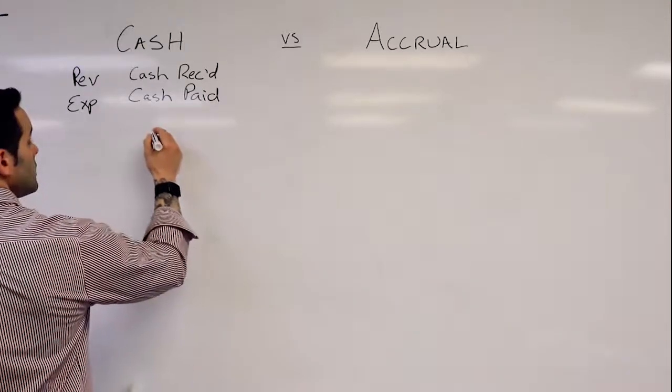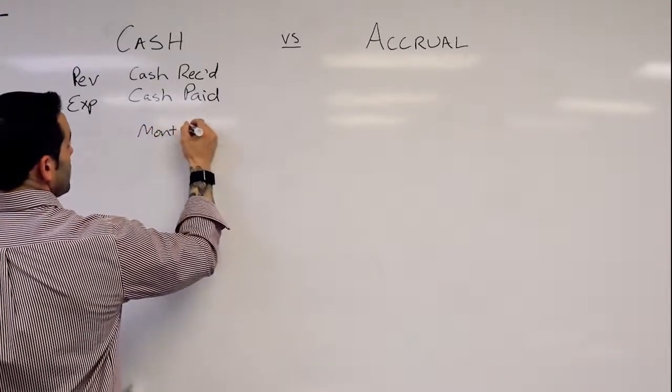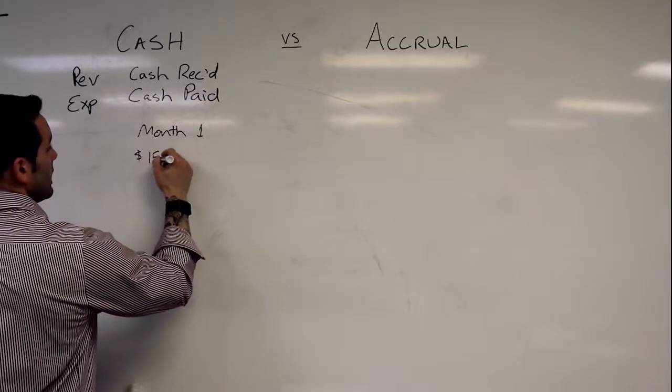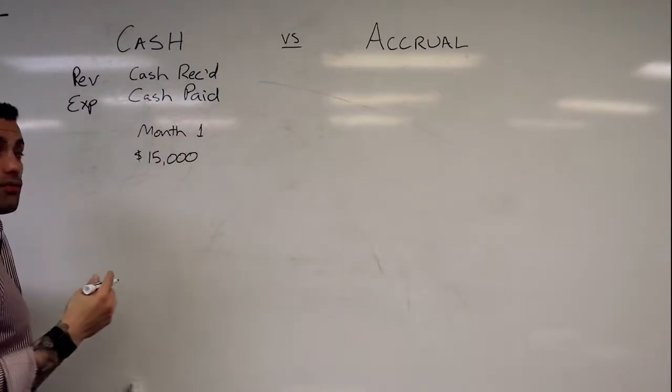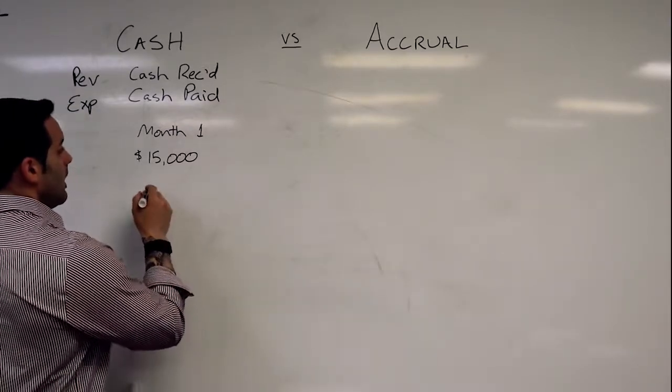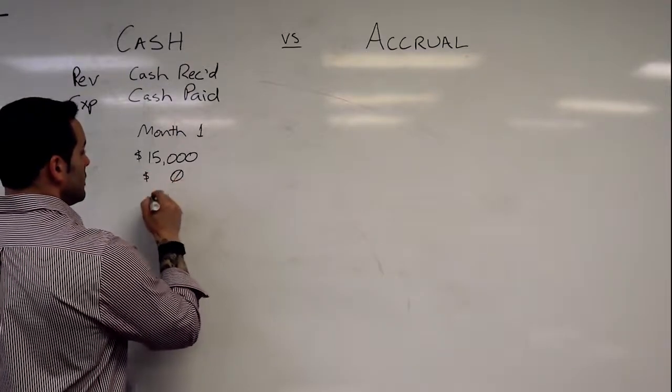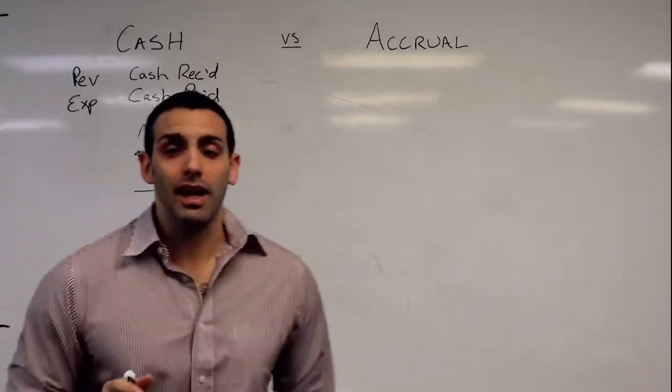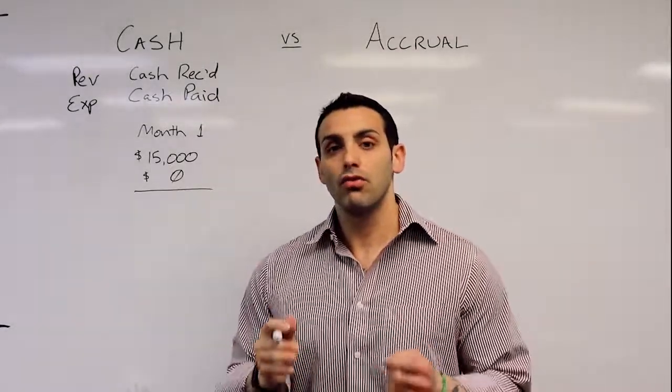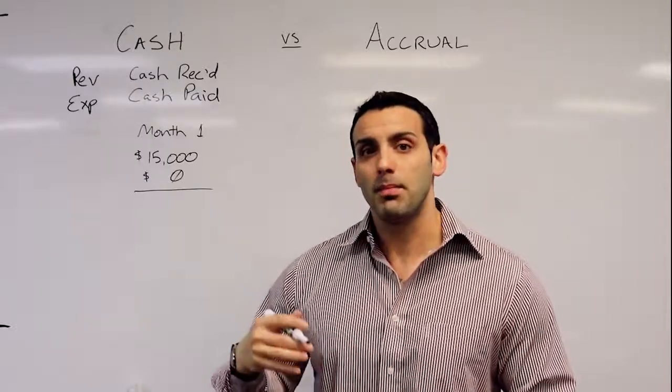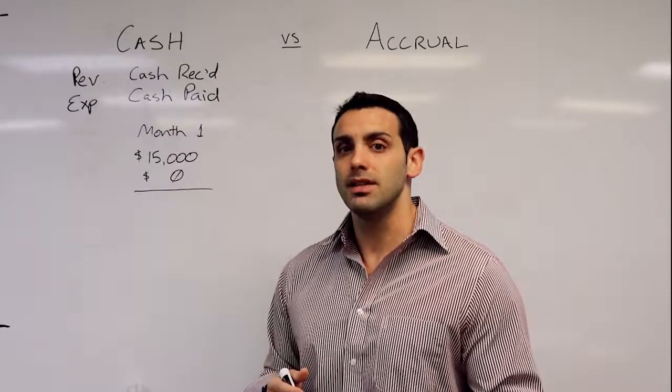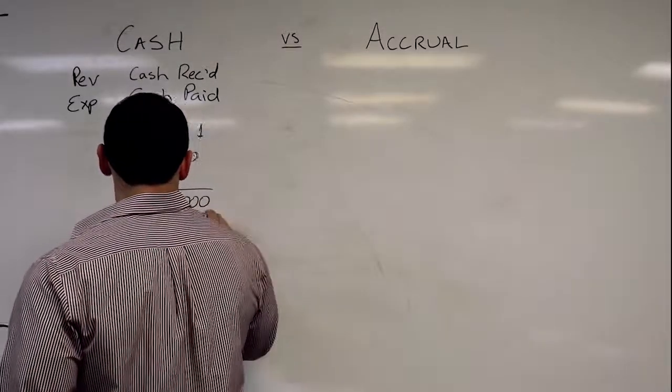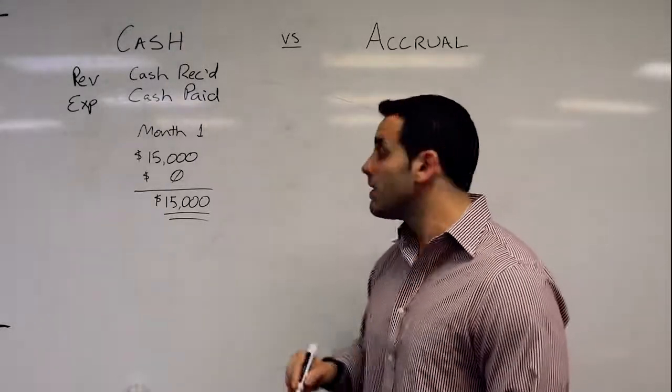Let me give you an example. In month one, I could have brought in or received fifteen thousand dollars in cash for sales. However, I may not have paid any expenses, especially if my vendors give me credit. So cash basis leads to some inaccuracies, especially when you're talking about credit. If my vendor told me I didn't have to pay till next month, well then cash basis may seem a bit inaccurate. In this model, I have fifteen thousand dollars of net income and it looks like a really good month.